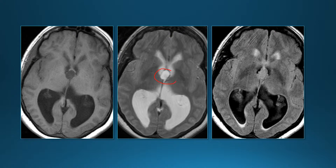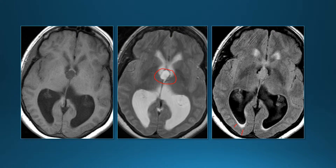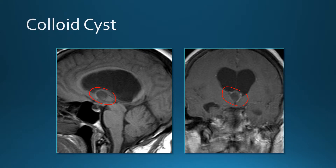There's a mass in the anterior third ventricle near the foramen of Monro, in this case causing hydrocephalus. You can see a little bit of transependymal edema. On the sagittal image here's the lesion; on coronal post-contrast there's no solid enhancement — maybe a little bit of rim enhancement, but no solid enhancement. We're dealing with a colloid cyst.